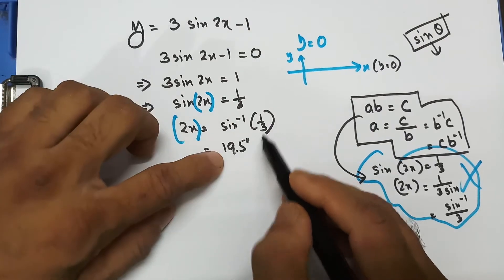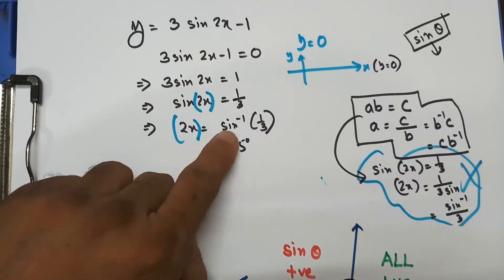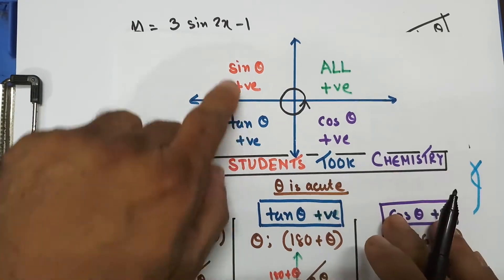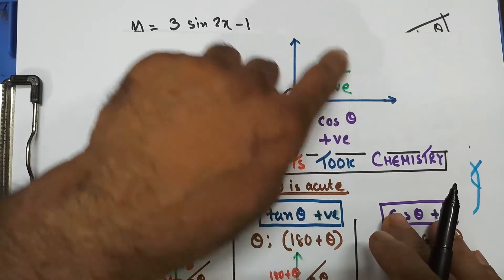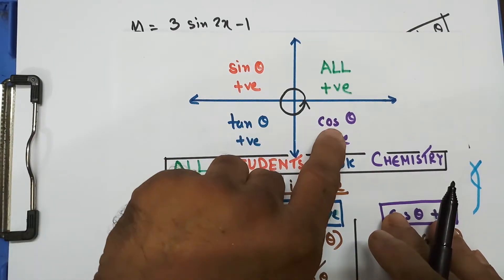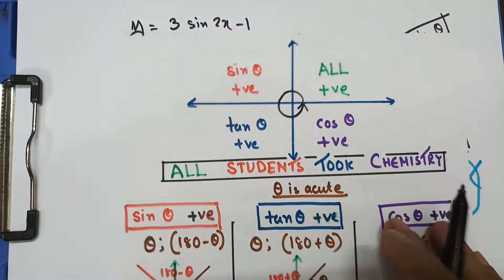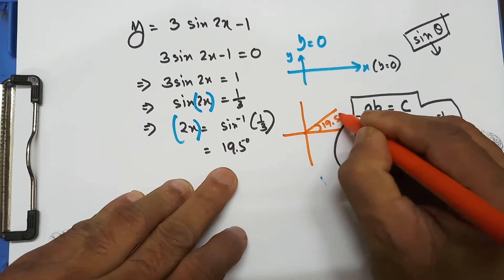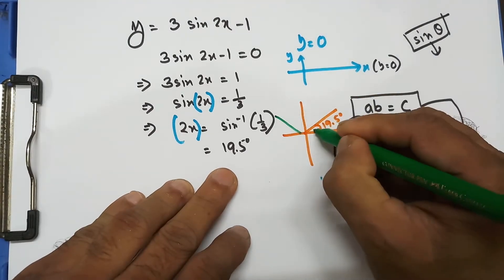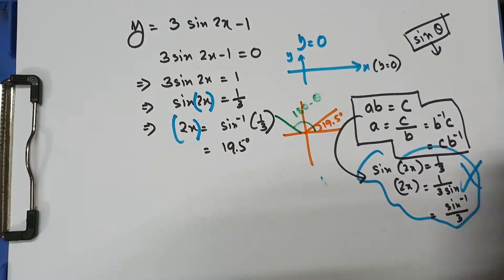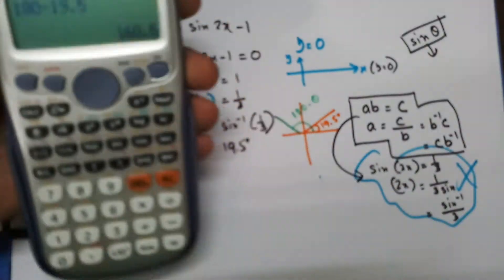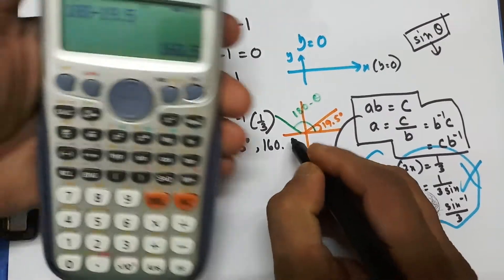Now, sine is positive, and the calculator gives 19.5 degrees — a positive value. Sine can be positive in the first quadrant and the second quadrant. All are positive in the first quadrant, sine is positive in the second, tan is positive in the third, and cos is positive in the fourth. So sine must be positive in the first and second quadrants. The first quadrant gives us 19.5 degrees. The second quadrant value is 180 minus theta, so 180 minus 19.5 gives us 160.5 degrees.